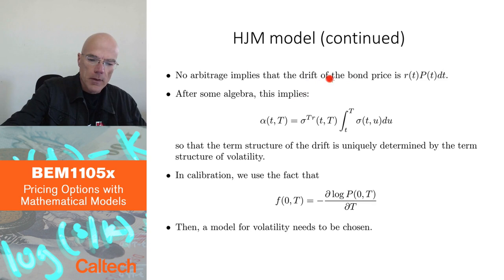They put it equal to Rpdt. So once you discount, it disappears, it becomes zero, and you have a martingale.